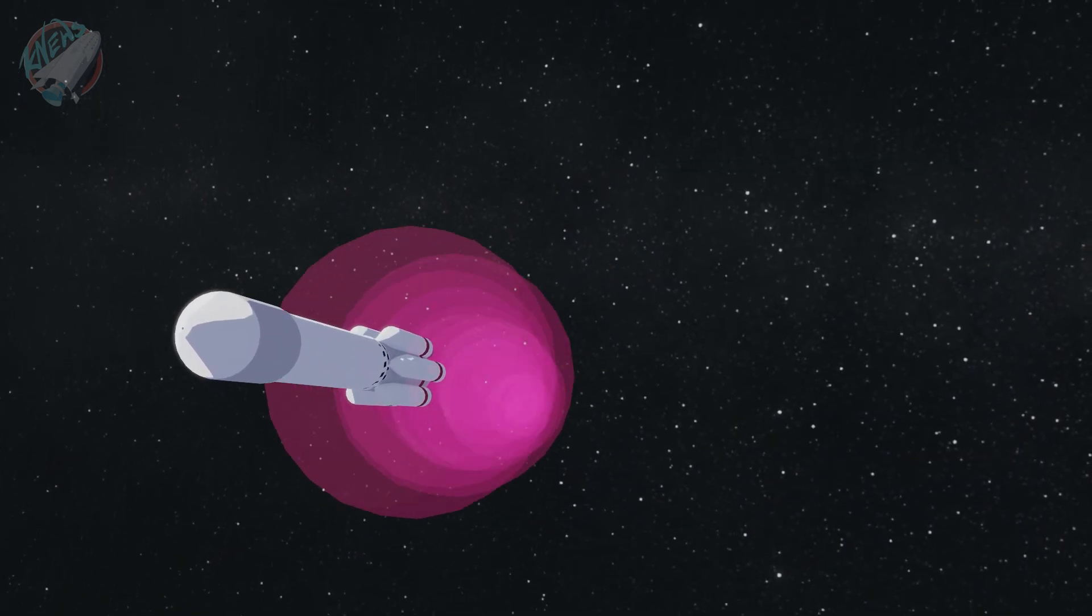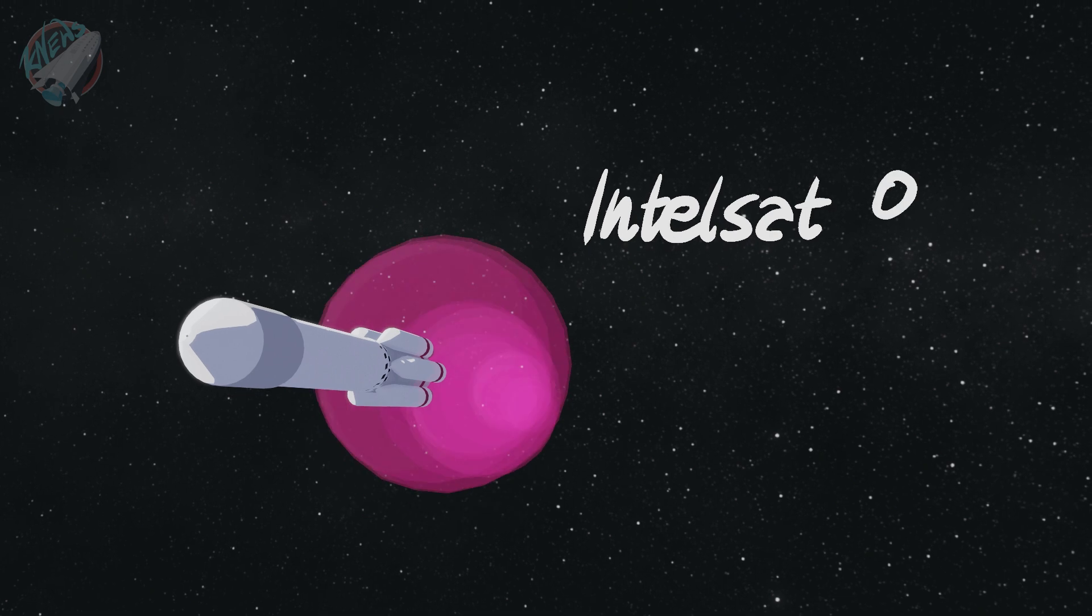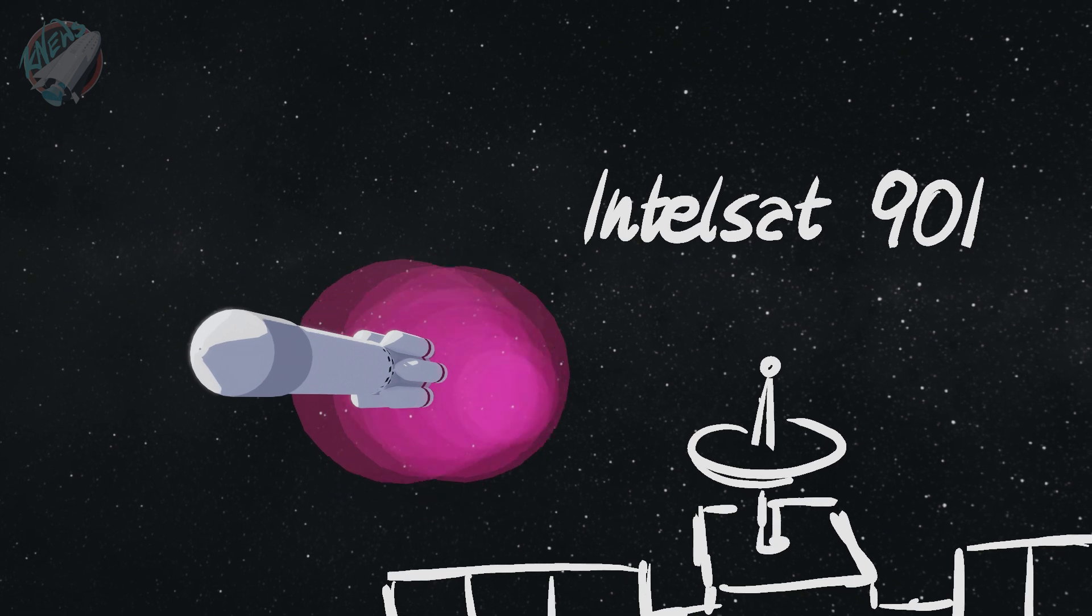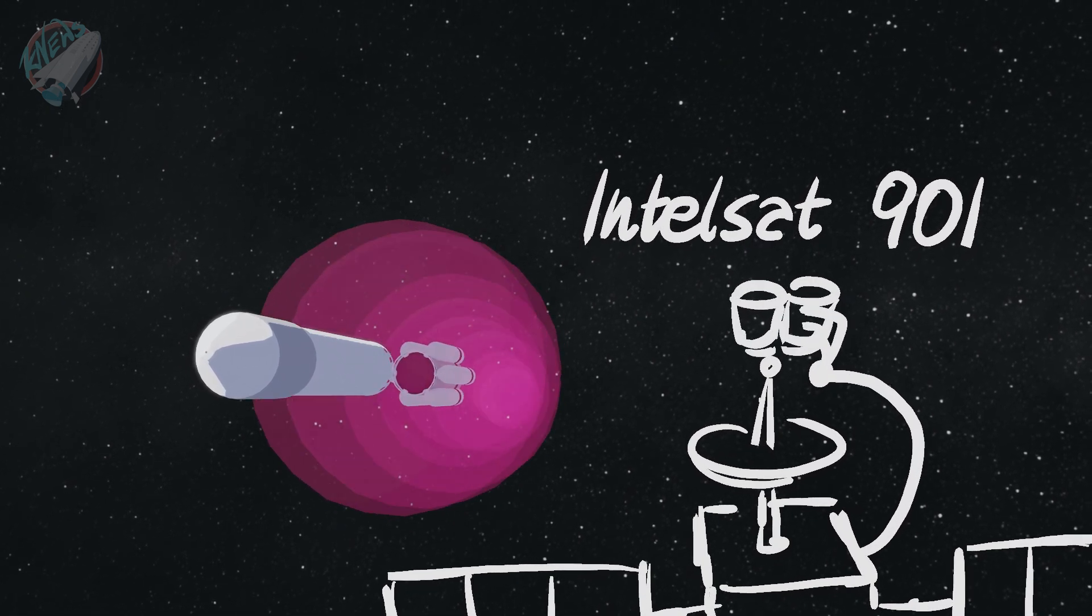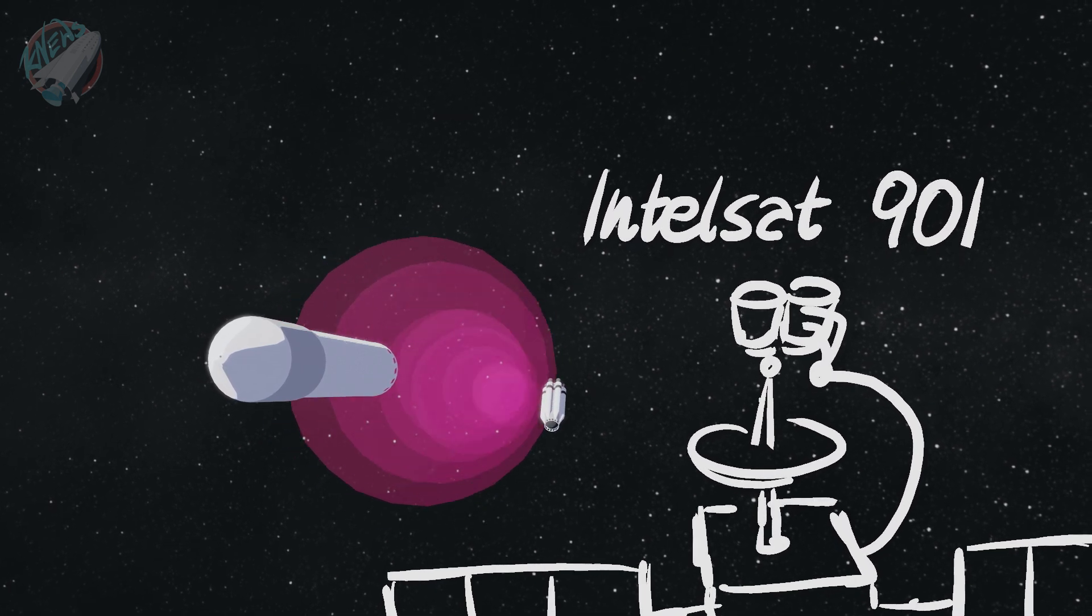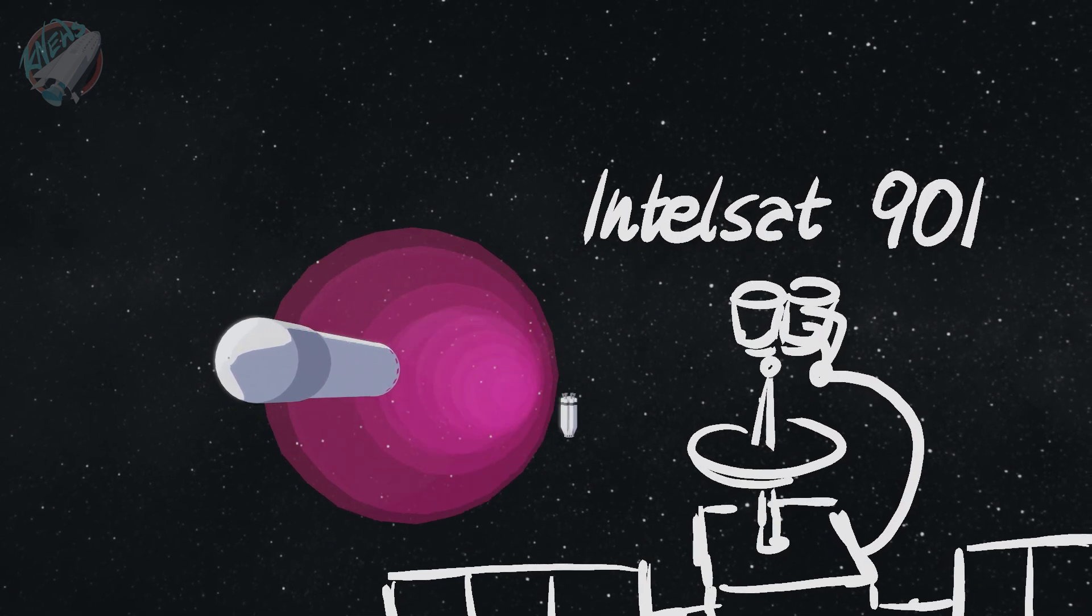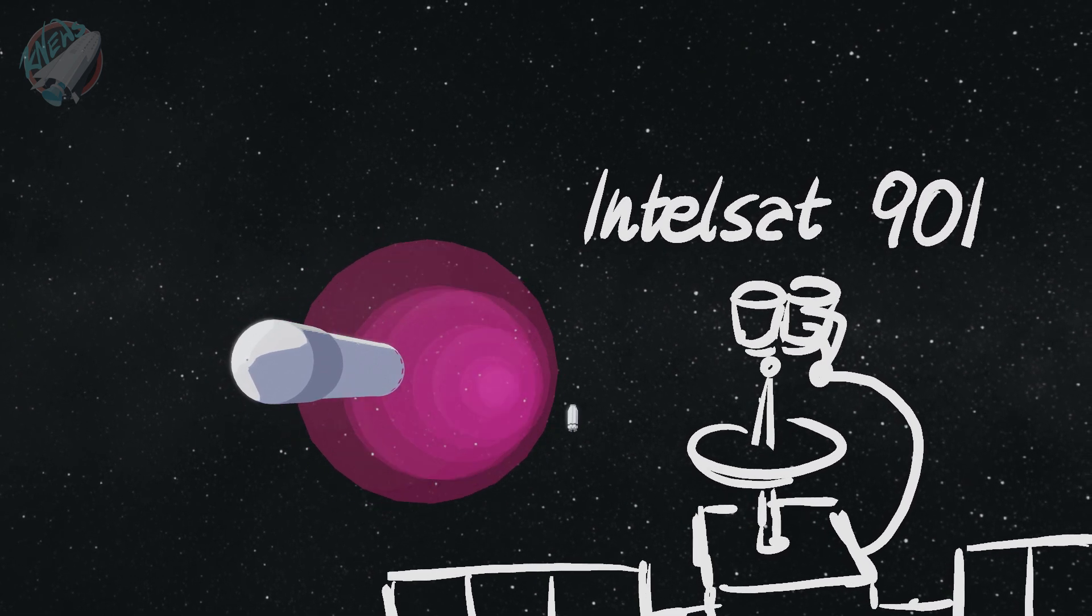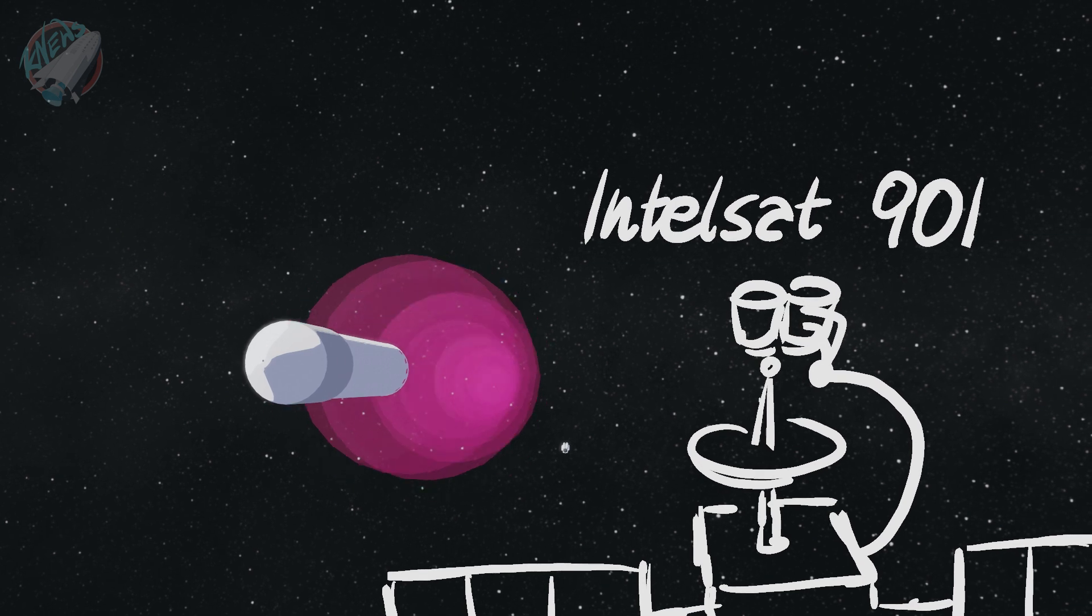Speaking of it, its first customer if you will is Intelsat 901. If my information is correct, this first maneuver must be only a test since 901 launched in 2001 and should be out of service by now enjoying its retirement. Though it made headlines in 2015 when it was approached by a Russian satellite for what was later deemed to be spy activities.